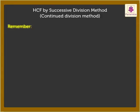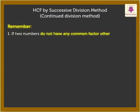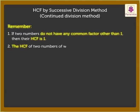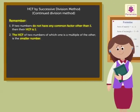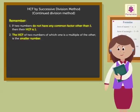Remember: 1) If two numbers do not have any common factor other than 1, then their H.C.F. is 1. 2) The H.C.F. of two numbers, of which one is a multiple of the other, is the smaller number. Kids, do not get jumbled up while you find the H.C.F. by the Continued Division Method. Have fun!